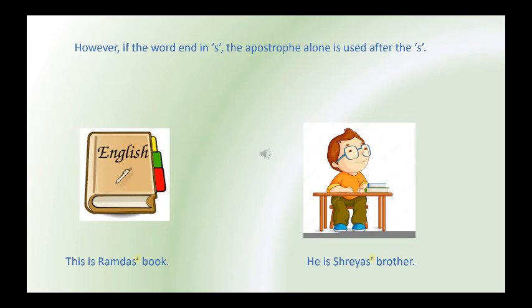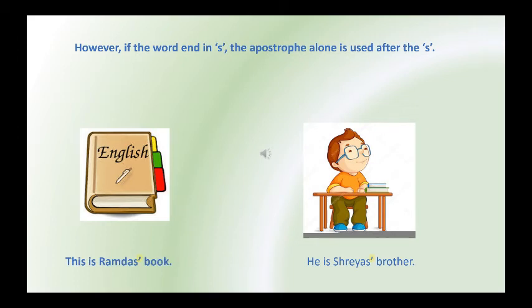However, if the word ends in s, the apostrophe alone is used after the s. Example: This is Ramdas's book. Since the word already ends with an s, we put an apostrophe after the letter s and no extra s is used. Second example: He is Shreya's brother. Here, the word Shreya ends with s, so the apostrophe is used after the letter s.